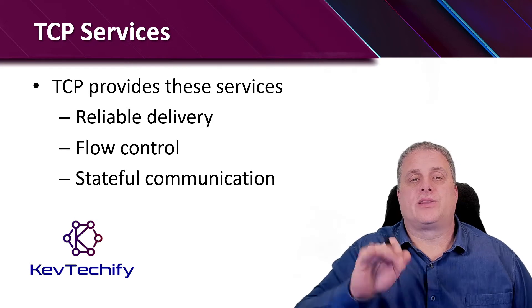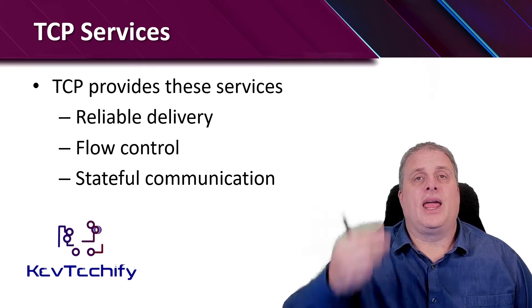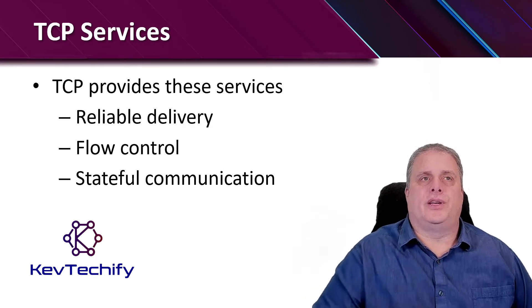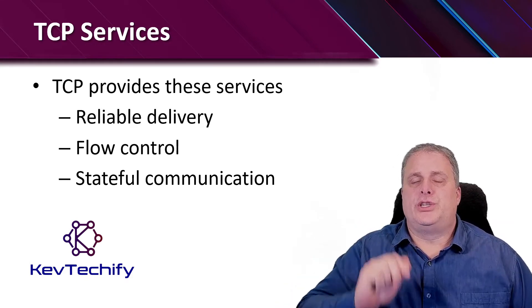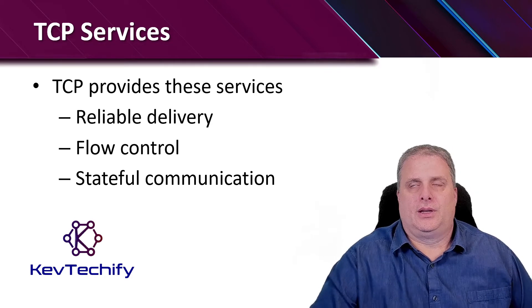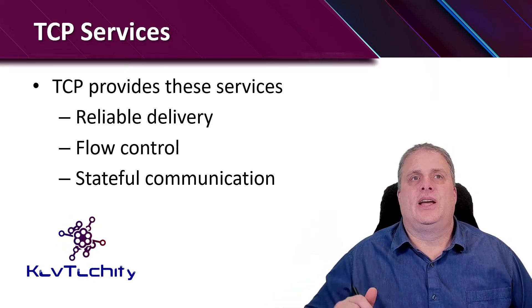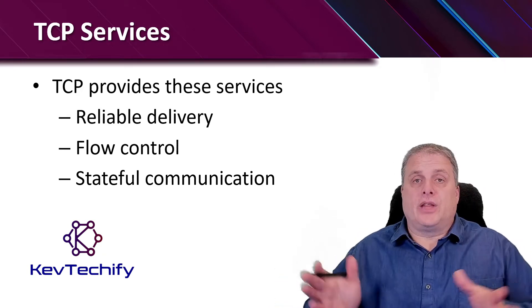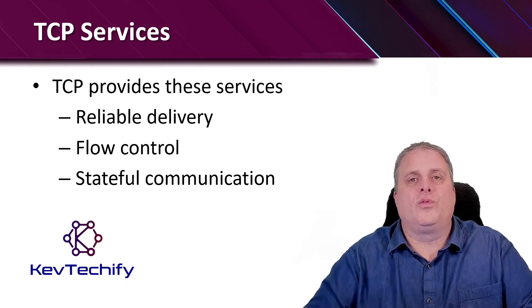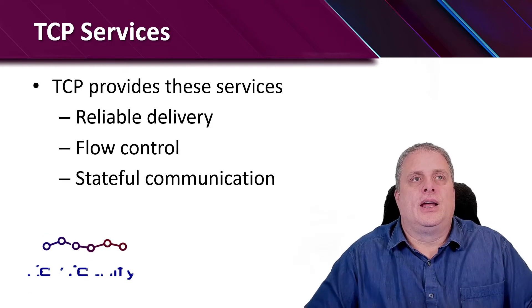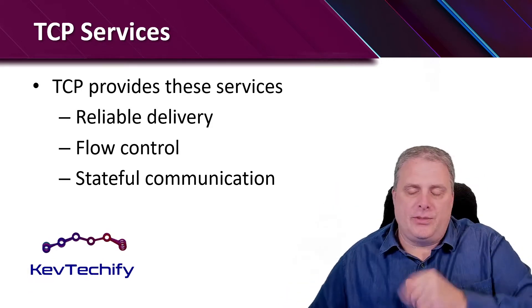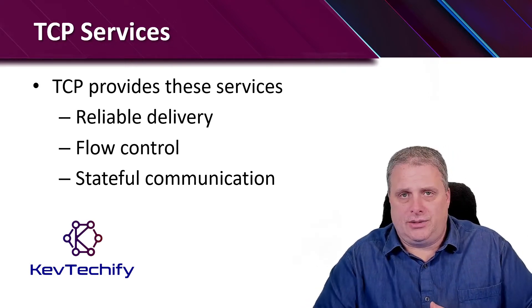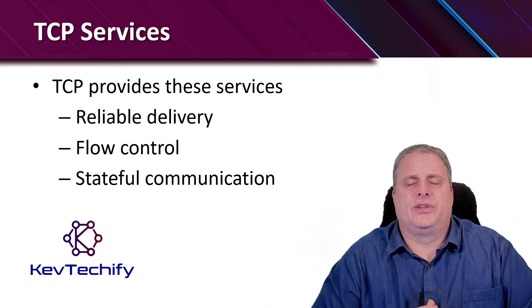TCP provides three services: reliable delivery, flow control, and stateful communication. For reliable delivery, TCP incorporates acknowledgments to guarantee delivery. If a timely acknowledgment is not received, the sender retransmits that data. Requiring acknowledgments can cause substantial delays because if we have to resend that data over and over, it's going to slow things down. Examples of application layers that use TCP reliability include HTTP, secure sockets, FTP, and DNS — those all use reliable delivery mechanisms.